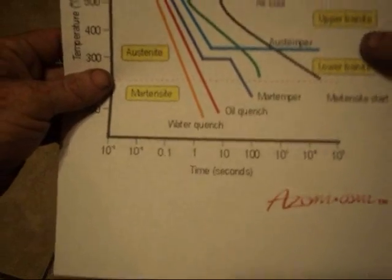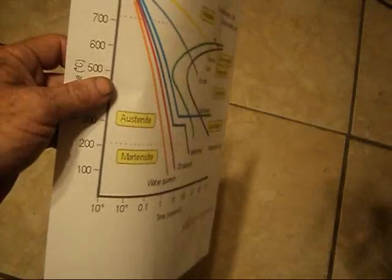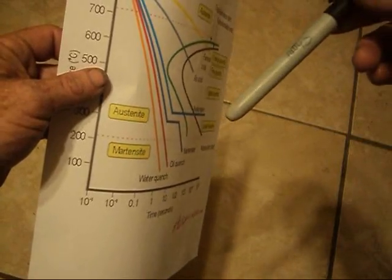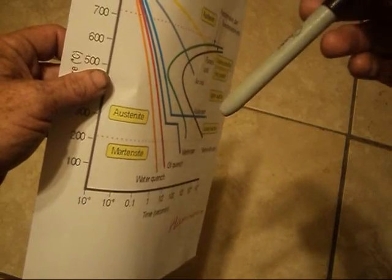But by the same token, it's extremely brittle because of that hardness. When you temper your steel, you're actually allowing some of the carbon atoms to escape and therefore relaxing the structure a little bit.